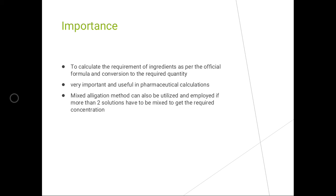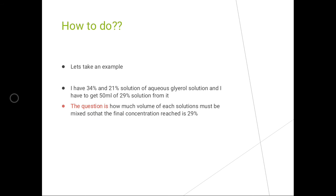Allegation literally means the calculation of relative amounts of ingredients of different percentage strength to make a product of required strength. As far as the allegation method is concerned, it is the calculation of the mixture of ingredients possessing different percentage strengths using the weight average of the mixture, given the quantity and the concentrations.